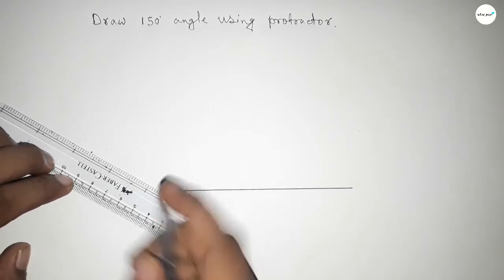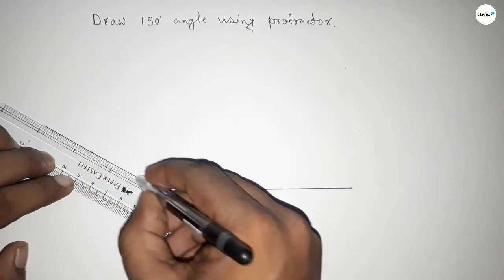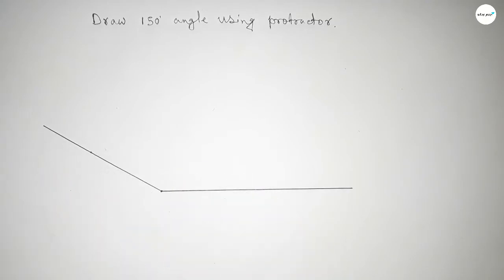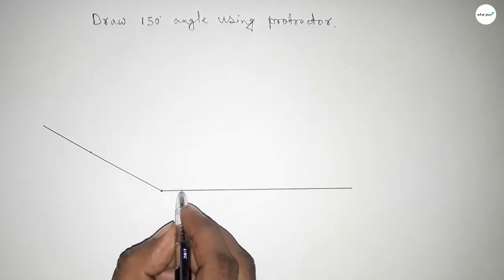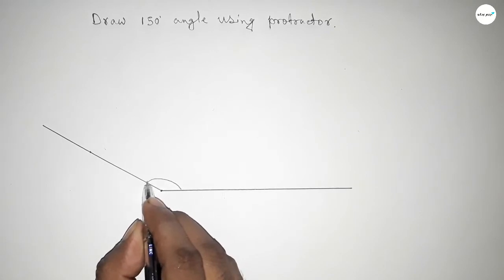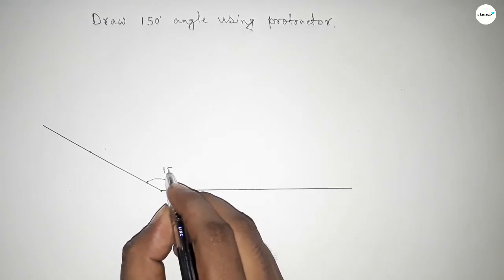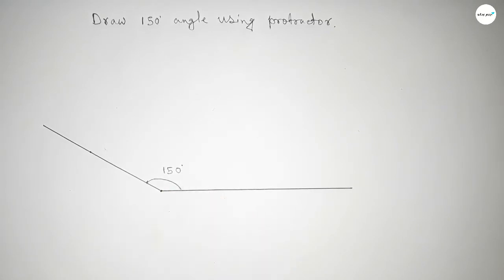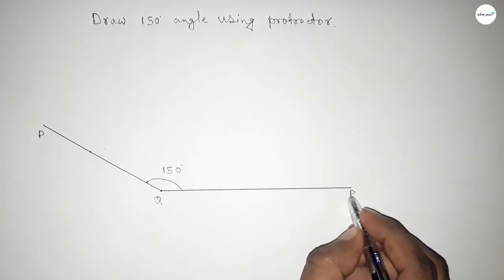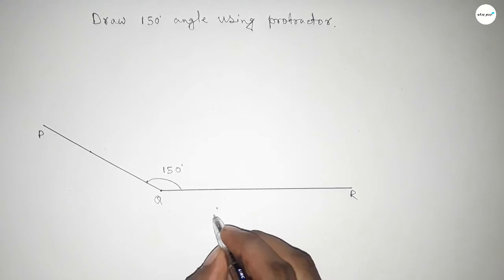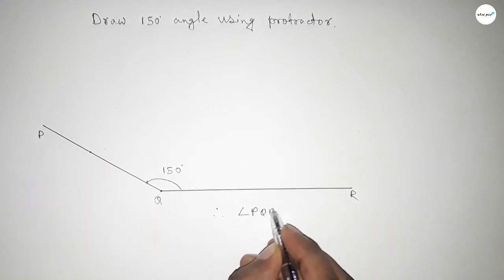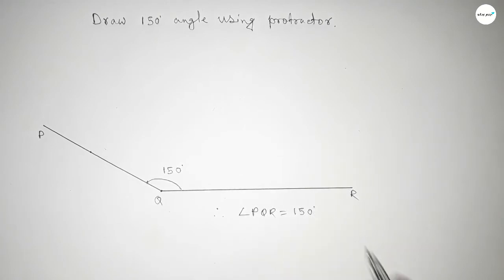So we got 150 degree angle and this is P, Q, and R. So angle PQR. Therefore angle PQR equal to we can write 150 degrees. That's all.